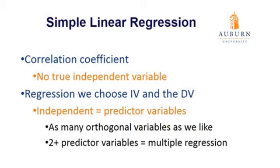If one variable is the predictor or independent variable, then the remaining variable must be the dependent variable, which we call the criterion variable — sometimes called the outcome variable. The criterion or outcome variable is the variable we're trying to predict. For example, if I wanted to predict grades from the number of absences, then grades would be the criterion or dependent variable, and absences would be the predictor. Given the number of absences a student has, I should be able to predict within a realm of confidence their grade.